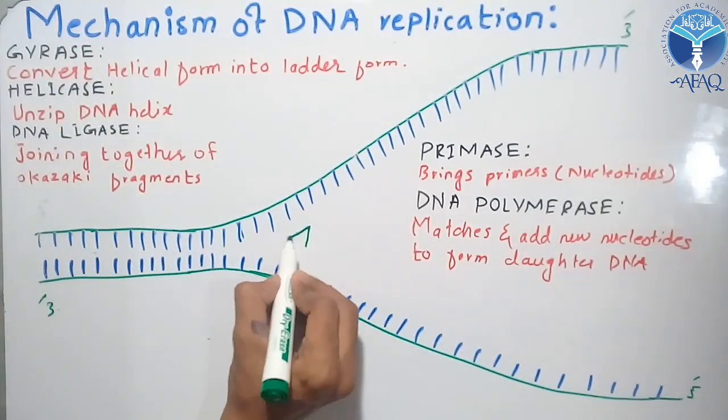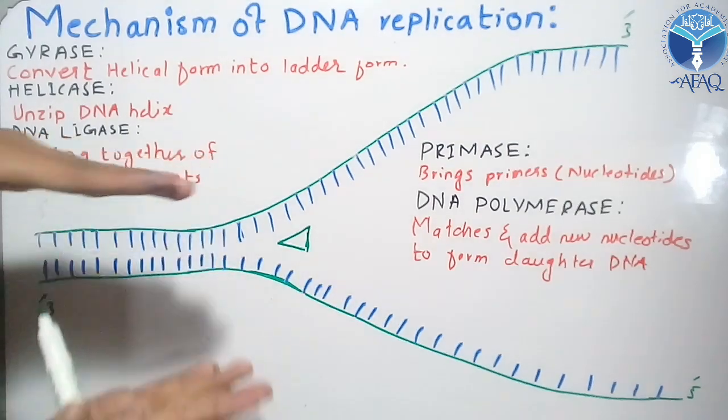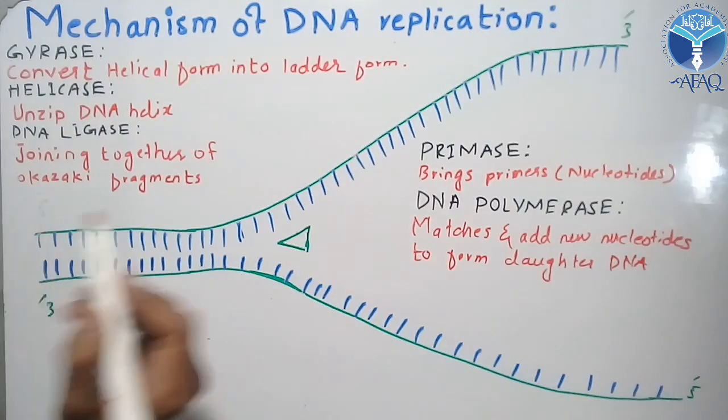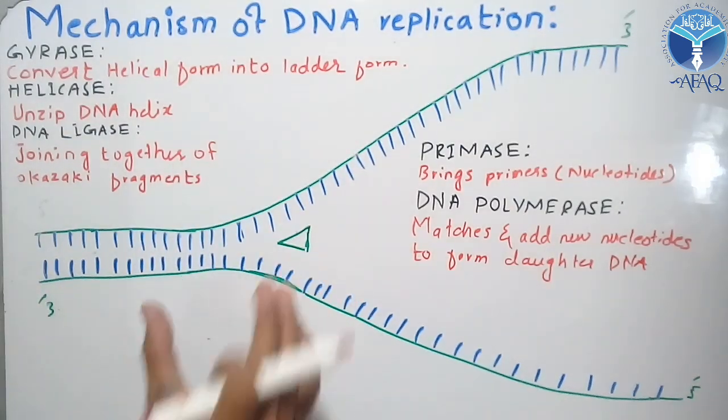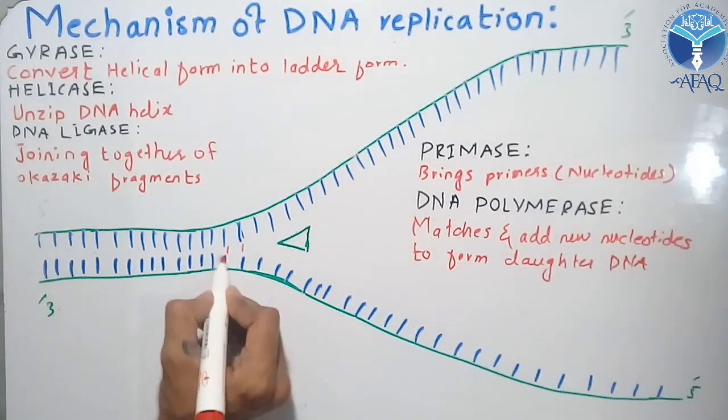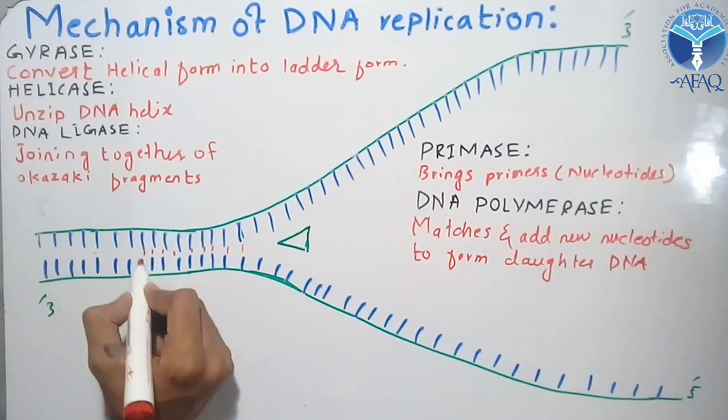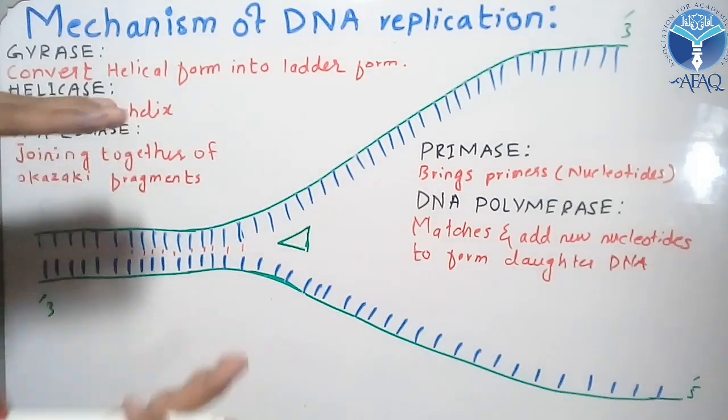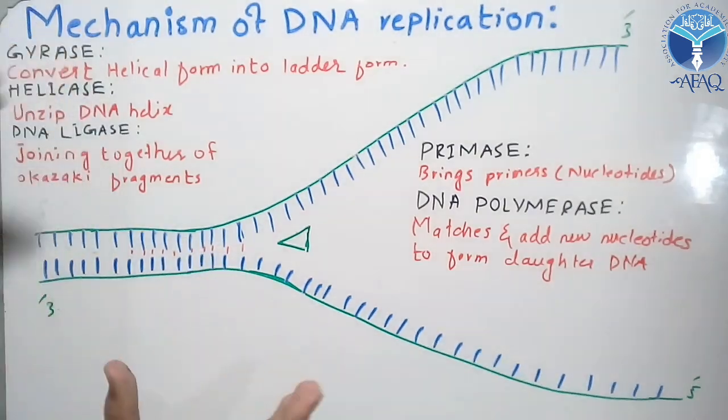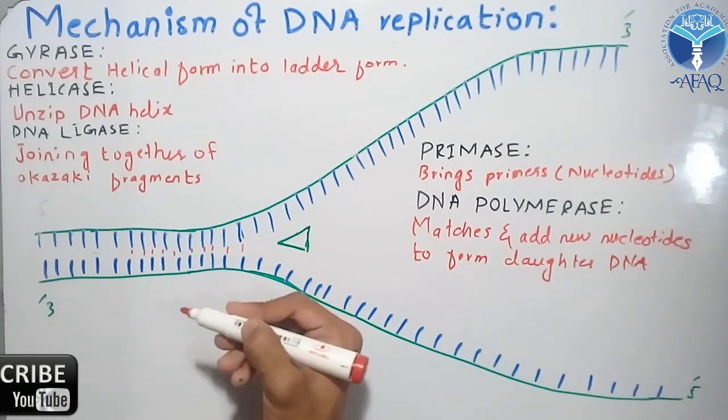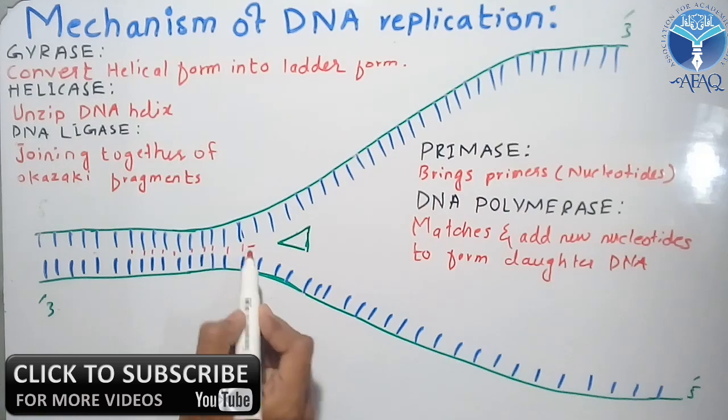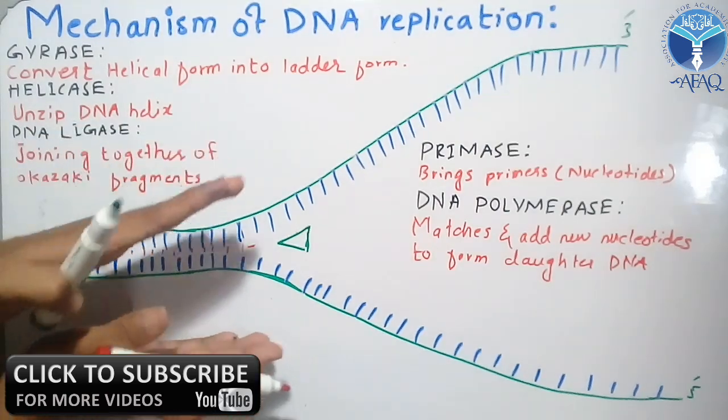Then helicase will come and unzip the ladder strand. The unzipping of the DNA helix occurs due to the breaking of hydrogen bonds. These are hydrogen bonds within the nucleotides - cytosine and guanine have triple hydrogen bonds, and adenine and thymine have double hydrogen bonds. The helicase breaks these hydrogen bonds and the DNA is split.